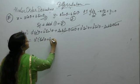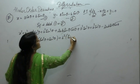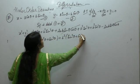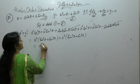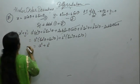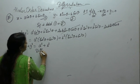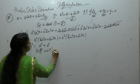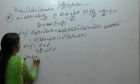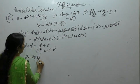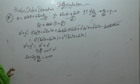After expanding, a² is common with cos²θ plus sin²θ, and b² is common with sin²θ plus cos²θ, both equaling 1. So x² plus y² equals a² plus b². Now differentiate with respect to x: 2x plus 2y(dy/dx) equals 0 since a and b are constants.